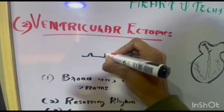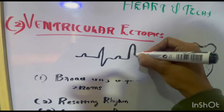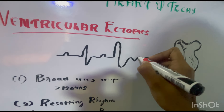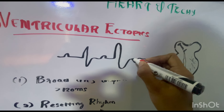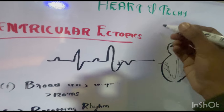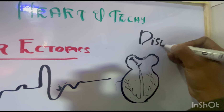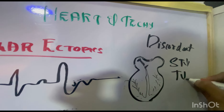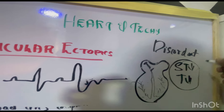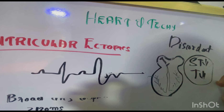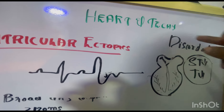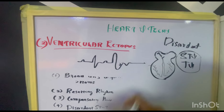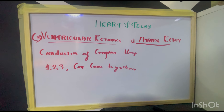Discordant ST-T changes: discordant ST-T means ST depression or T-wave inversion occurring during ventricular ectopics. In a normal beat — P-wave, QRS, T — and in an ectopic, the T-wave is inverted and you can also see ST segment depression. Discordant ST-T changes can also be seen in LVH strain pattern. So discordant means ST depression and T-wave inversion in ventricular ectopics. That is all about ventricular ectopics.